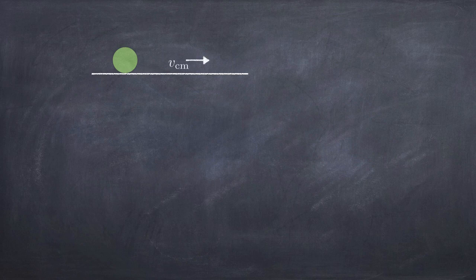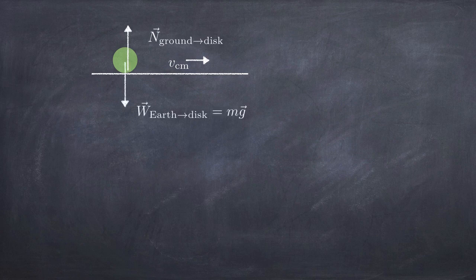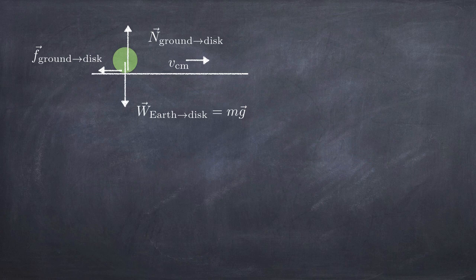Let's draw a physics picture describing what's going on. We've got a wheel rolling along the ground, moving with a speed v — the center of mass of the wheel is moving with speed v to the right. There are forces acting: a normal force pushing up from the ground, the weight of the wheel pulling down, and the frictional force — the sliding kinetic friction between the point of contact and the ground.